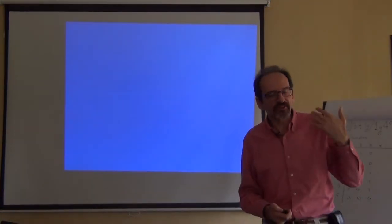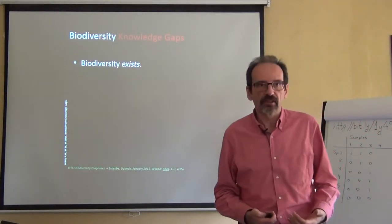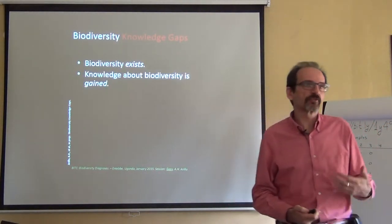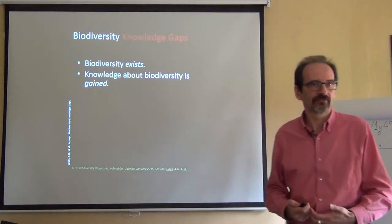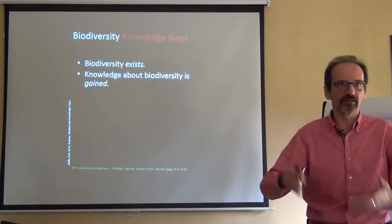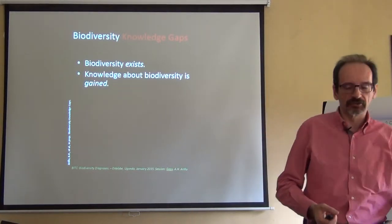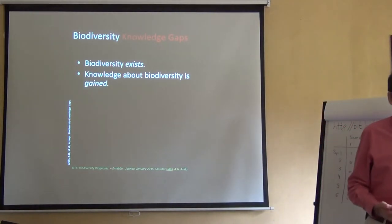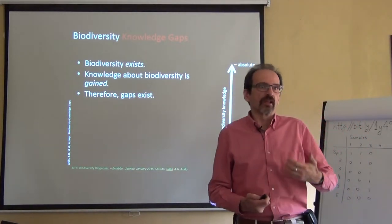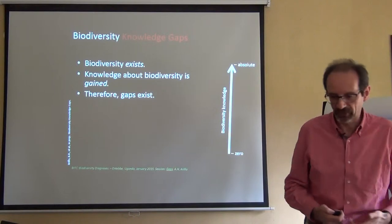Let's go specifically to the biodiversity knowledge gaps. We know that biodiversity exists. There is a reality, which is the variety of life out there, and the knowledge of biodiversity has to be gained. Biodiversity is there — it's like understanding the universe. The universe was there, but until a few centuries ago we thought that the universe was a set of closed spheres in which lights were moving around. So we need to gain knowledge about biodiversity. There will always be a gap between what we know — what we have gained in terms of knowledge — and what we should or could eventually know.